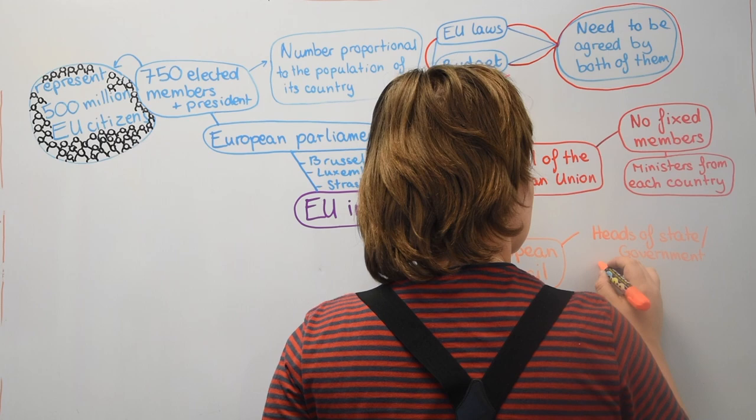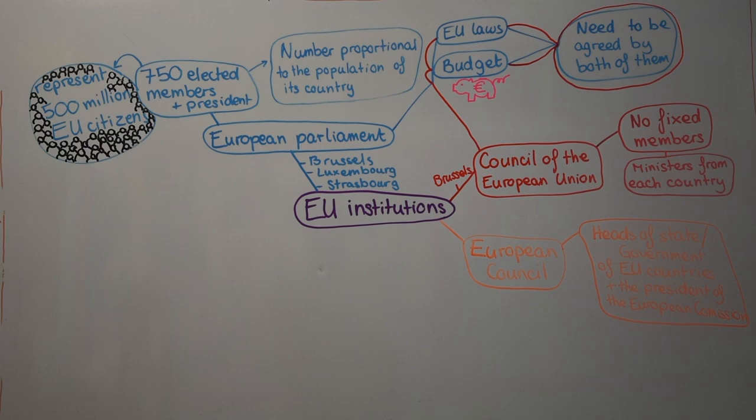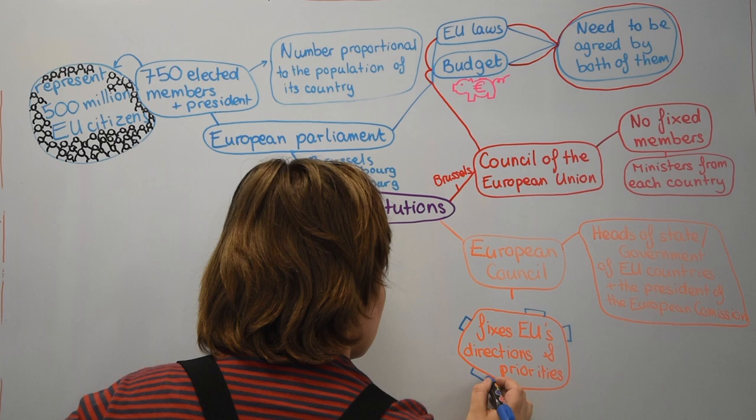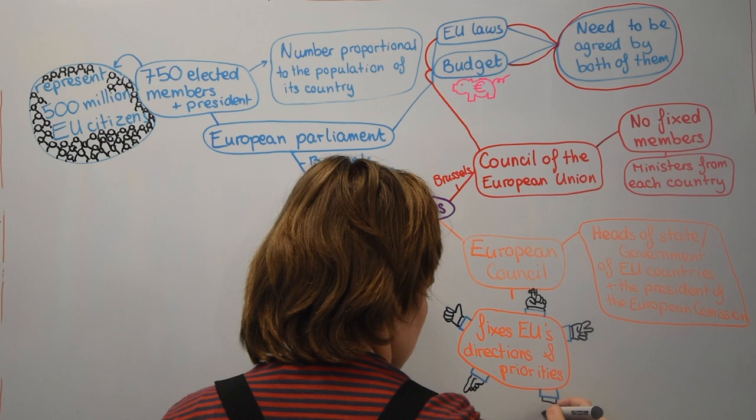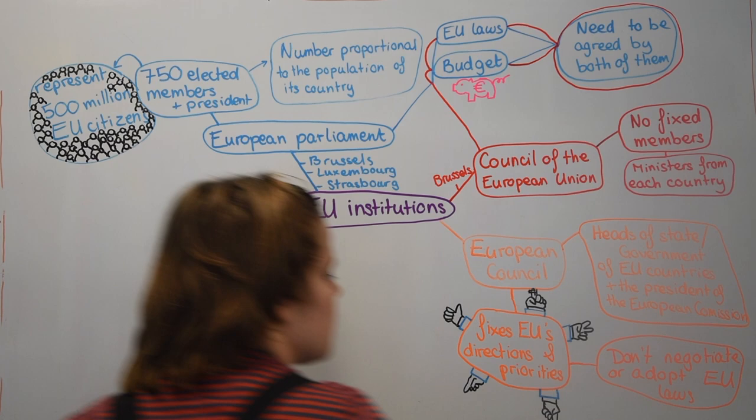Thirdly there is the European Council. The members are the president, the heads of state or government of each EU country, plus the president of the European Commission. They fix the EU's directions and priorities. They organize the political agenda of the EU, and unlike the Council of the EU, they don't negotiate or adopt EU laws.